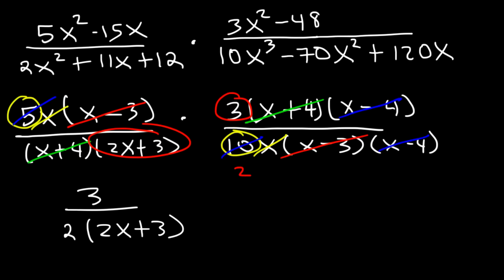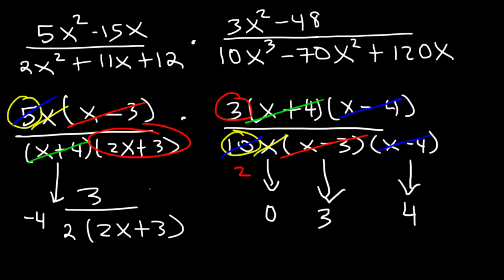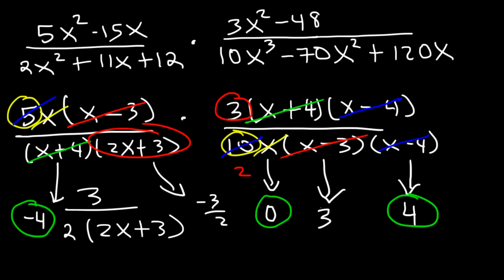Sometimes you need to identify the excluded values. You cannot have a 0 in the denominator. So x = 4 would produce a 0 in the denominator even though it cancels, and so would x = 3, x = 0, and x = negative 4. Also, setting 2x + 3 equal to 0 gives x = negative 3/2. Those are the points of discontinuity — x cannot equal negative 4, 4, 0, 3, or negative 3/2.